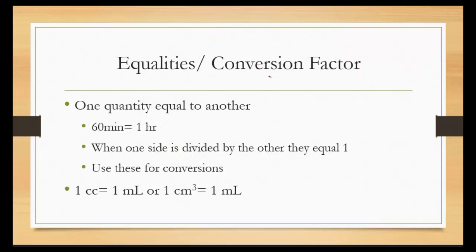Equalities or conversion factors. It's one quantity which is equal to another. For instance, 60 minutes is equal to 1 hour. No matter what, it's always going to be 60 minutes is equal to 1 hour. When one side is divided by the other, it's going to equal 1. So for instance, 5 divided by 5 is 1. 20 divided by 20 is 1. Anything divided by itself is 1. So that means 60 minutes divided by 1 hour. Because those two are the same, it's going to equal 1.